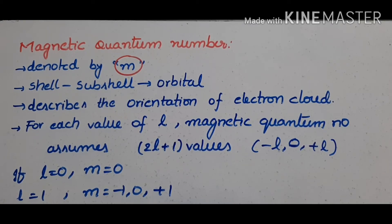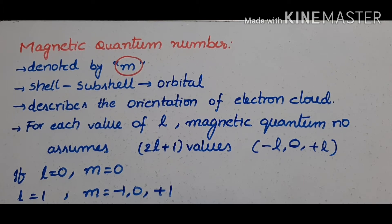Hi students, today's topic is magnetic quantum number. We discussed the principal quantum number and azimuthal quantum number in earlier sessions. After that we came to this. Let's go into the topic.